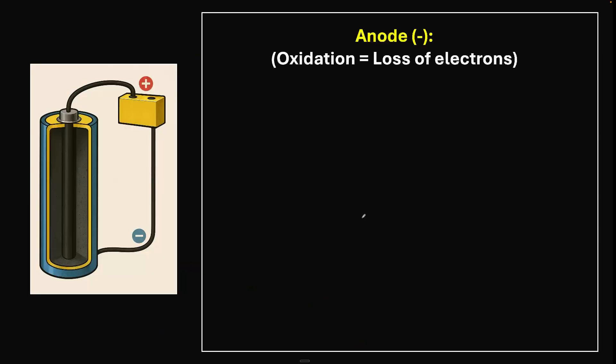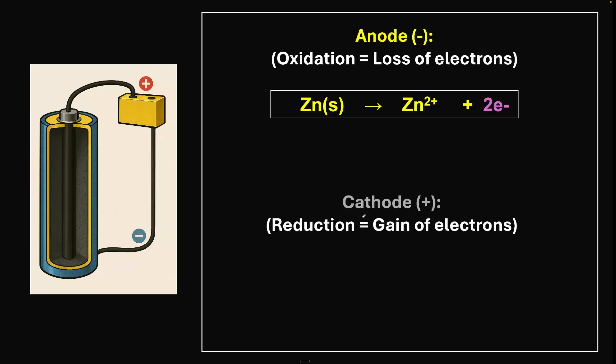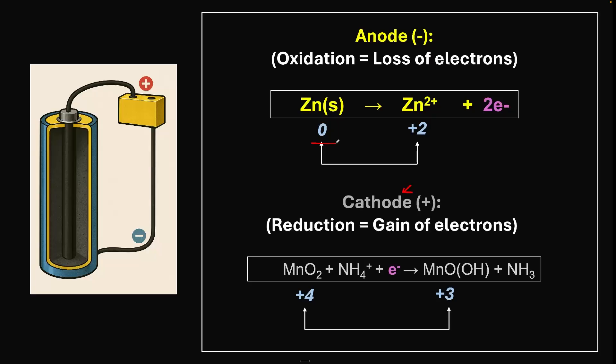Putting this together, at the anode we have oxidation, loss of electrons, where zinc becomes zinc ion plus two electrons. At the cathode we have reduction, gain of electrons. Manganese becomes manganese oxide hydroxide. We're going from zero to plus two oxidation state for zinc, and from plus four to plus three for manganese. This is a simplified version for understanding purposes.